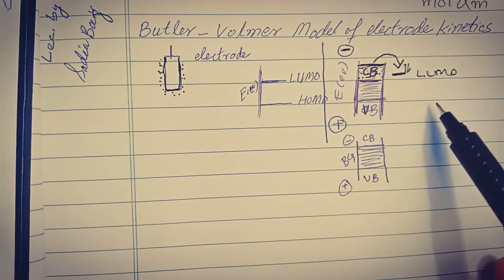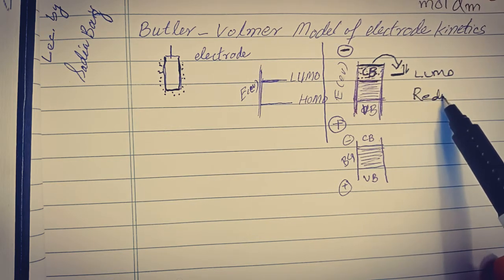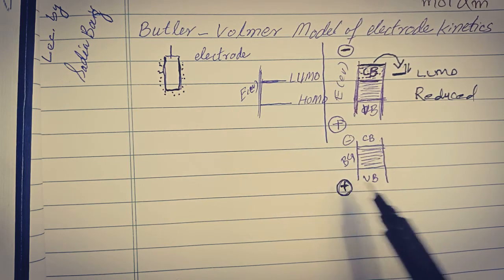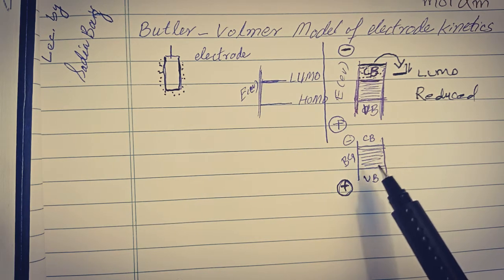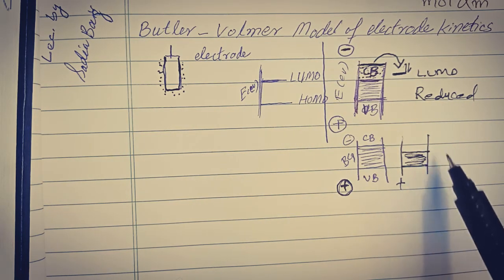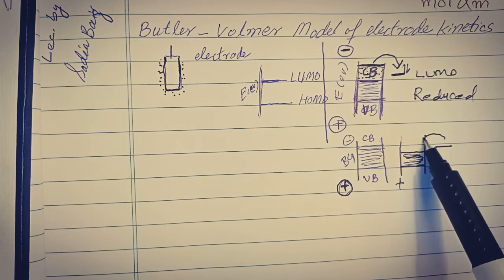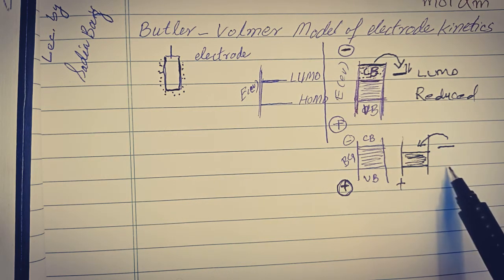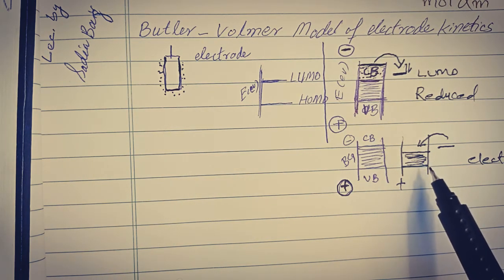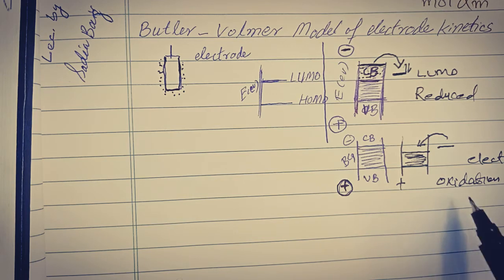We can see that the analyte species present in the electrolyte solution is reduced. Whereas when a positive voltage is applied to the electrode, the Fermi level of the electrode is lowered, which leads to interfacial electron transfer from the electrolyte solution towards the electrode, resulting in the oxidation of the analyte.